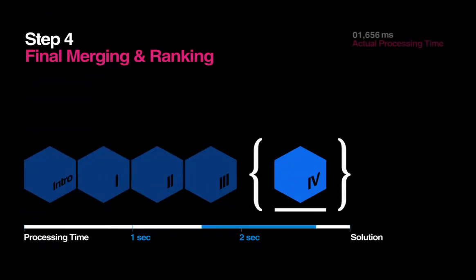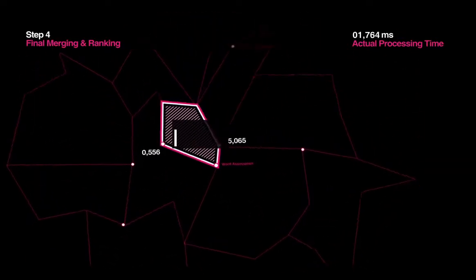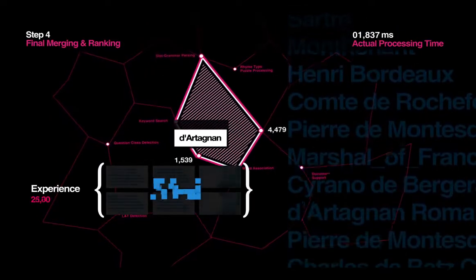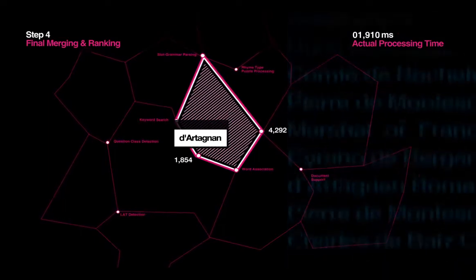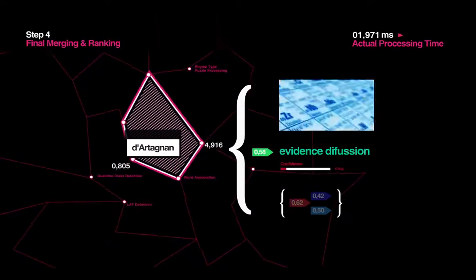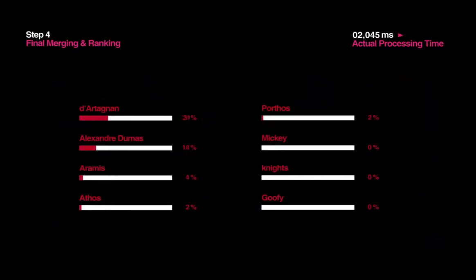Step 4: Final Merging and Ranking. Different types of evidence are better at solving different types of questions. So, just like a person learns from practice, Watson uses the experience it gains from trying to answer similar questions in order to weigh the importance of its different types of evidence. It's not about memorizing trivia. By playing thousands of practice games, Watson learns how to weigh, apply, and combine its own algorithms to help decide the degree to which each piece of evidence is useful or not. These weighted evidence scores are merged together to decide the final rankings for all of the possible answers, with the highest ranked answers appearing in order on Watson's answer panel.